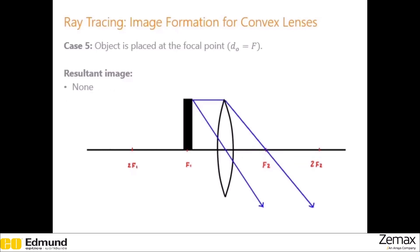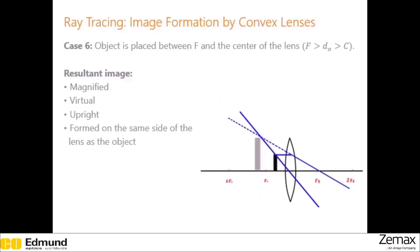Case five: where the object is placed at the focal point, there's no image formed at all. The rays that pass through the lens leave parallel to each other, and if the rays are parallel they will never meet no matter how far we trace them. If we trace them backwards they're still parallel, so there's no virtual image plane either. Case six: where the object is placed between the focal point and the lens, the rays that pass through the lens will diverge. We must trace these rays backwards to find the point of convergence, which means our image is virtual. Anytime you have to do this extra backwards ray tracing, you will have a virtual image. The image is upright, magnified, and formed on the same side of the lens as the object.